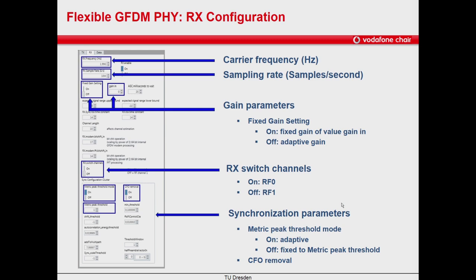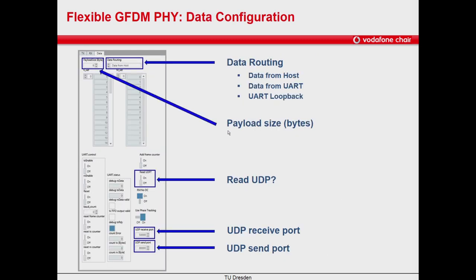Let's continue with the Data tab. Here we can select the payload size in bytes. With data routing, we indicate where the input data to the transmitter comes from. The data can be sent from the host to the FPGA, or obtained via UART if the auxiliary input-output port of the USRP is used. We will select data from host. If read UDP is set to off, the data will be generated on host as a RAM function; we will select on to get the data via UDP.